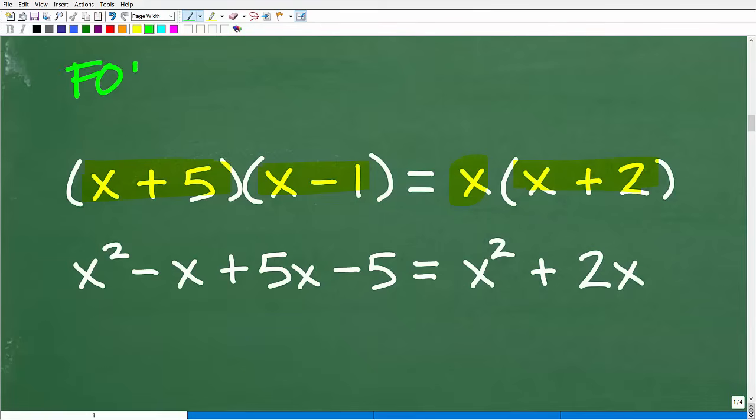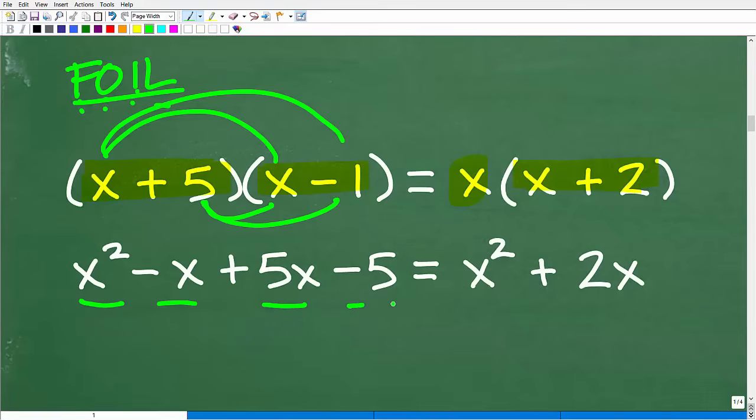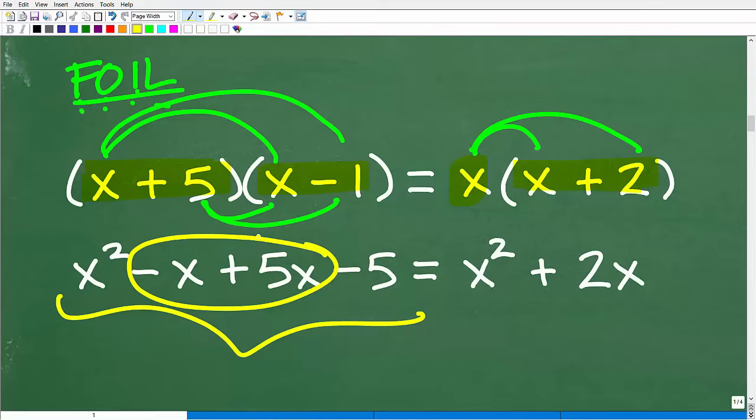We can use the FOIL method right here. What's FOIL stand for? First, outer, inner, last. So x times x is x squared, x times negative one, we're just doing the FO. The outers is x and negative one, so that's negative x. The inner is five times x. And then the last terms is five times negative one, negative five. Over here, we have x times x, which is x squared, and x times two, which is two x. We also have this lovely quadratic equation.